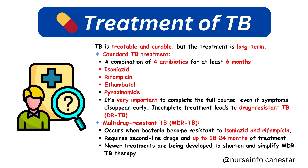TB is treatable and curable, but the treatment is long-term. Standard TB treatment involves a combination of 4 antibiotics — isoniazid, rifampicin, ethambutol, and pyrazinamide — for at least 6 months. It's very important to complete the full course even if symptoms disappear early. Incomplete treatment leads to drug-resistant TB (DR-TB). Multi-drug-resistant TB (MDR-TB) occurs when bacteria become resistant to isoniazid and rifampicin, requiring second-line drugs and up to 18–24 months of treatment. Newer treatments are being developed to shorten and simplify MDR-TB therapy.